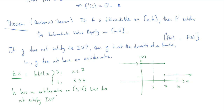The reason h has no antiderivative is that h does not satisfy the IVP — it jumps from 3 to 1 with nothing in between. By Darboux's theorem, that means it cannot be the derivative of anything. This is quite striking: a very simple step function cannot have an antiderivative. And this leads to an important point — antidifferentiation and integration are not the same thing.